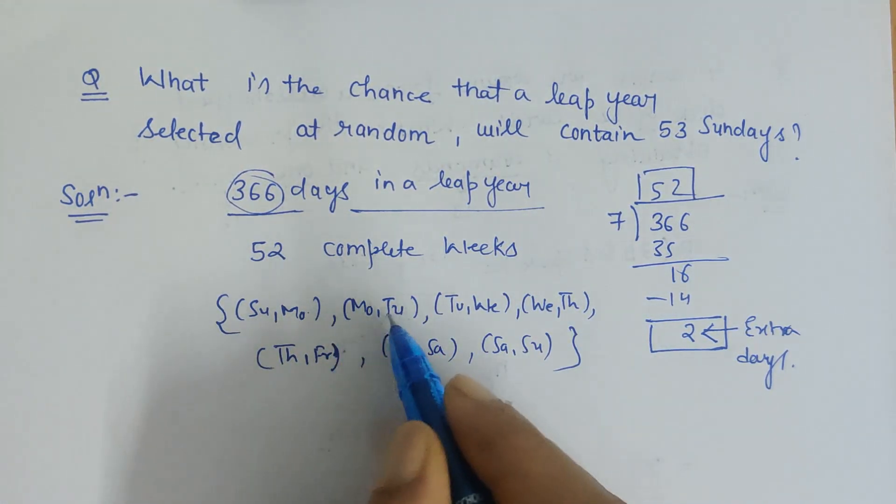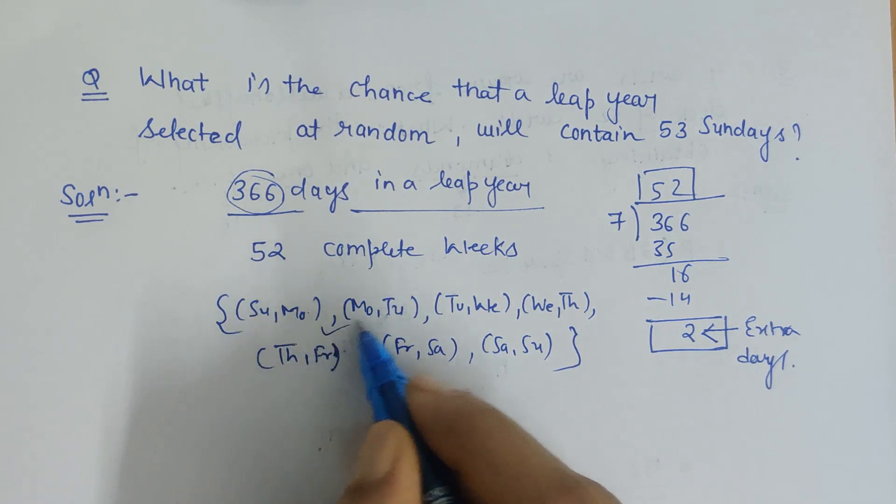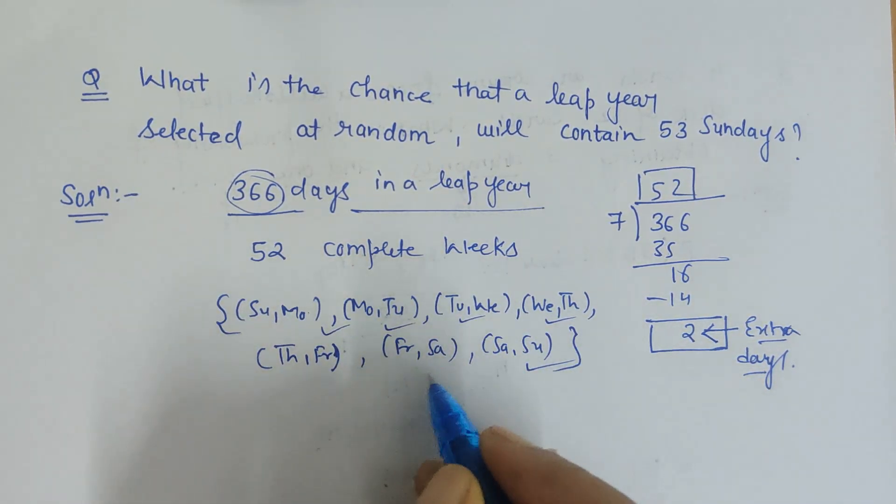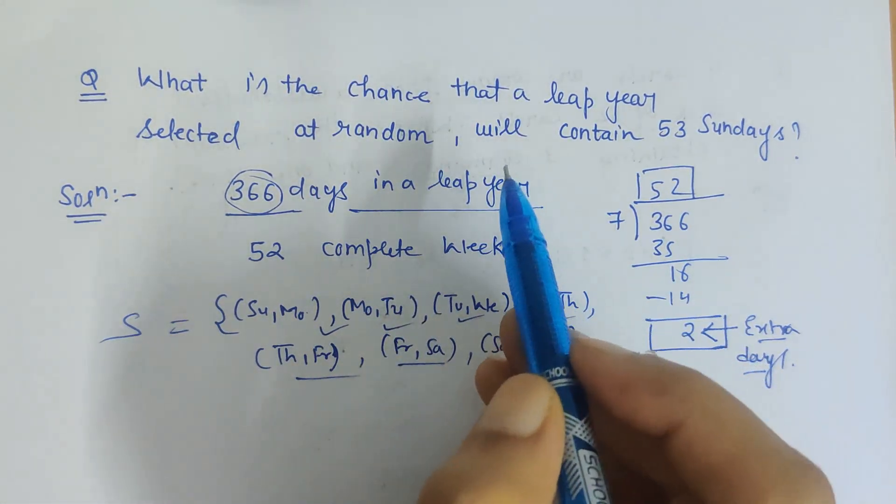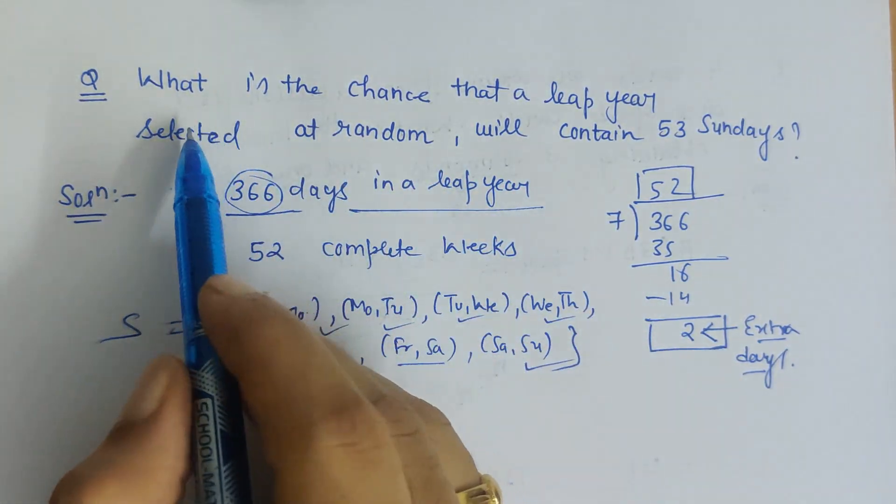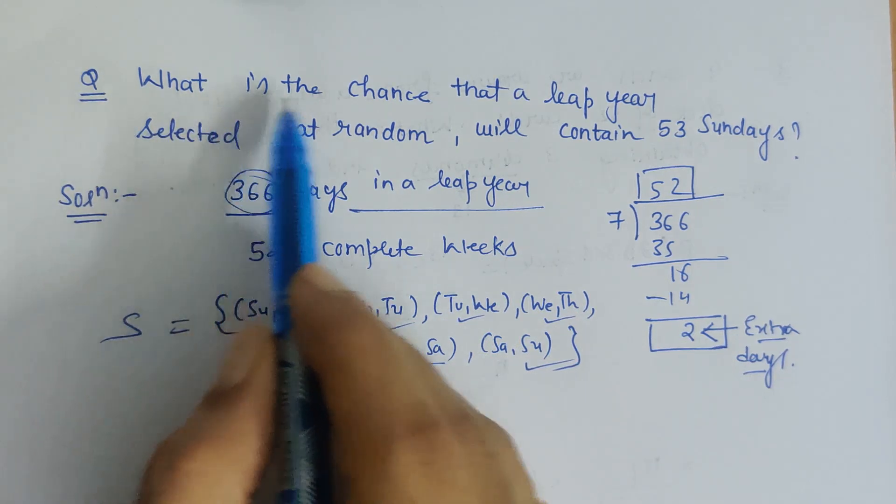Now let's see the problem and what it is asking. It is saying, what is the chance that a leap year selected at random will contain 53 Sundays?